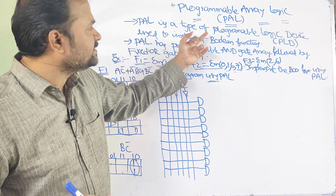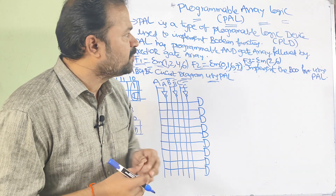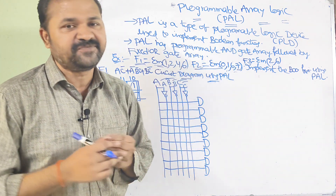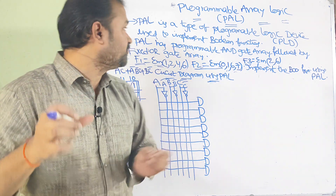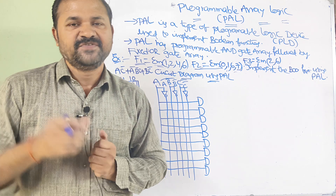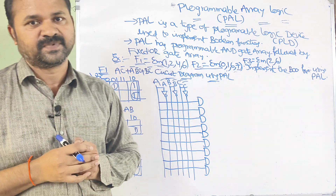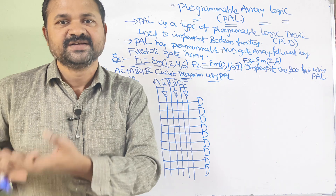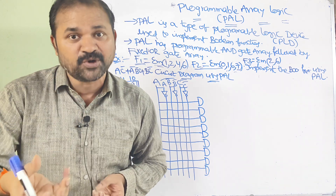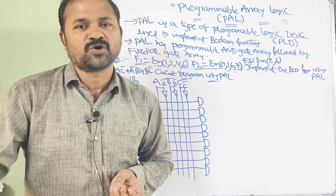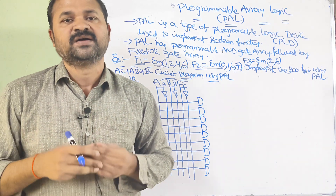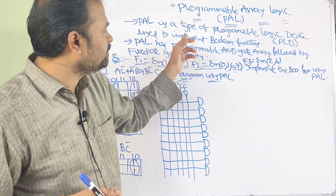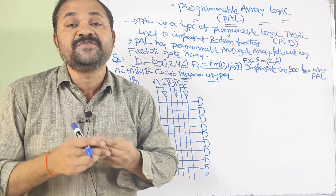PAL is a type of programmable logic device used to implement boolean functions. With the help of PAL we can do some programming — we can write some logic like addition, swapping, and other operations on the device. So by using PAL, mainly we can implement boolean functions.